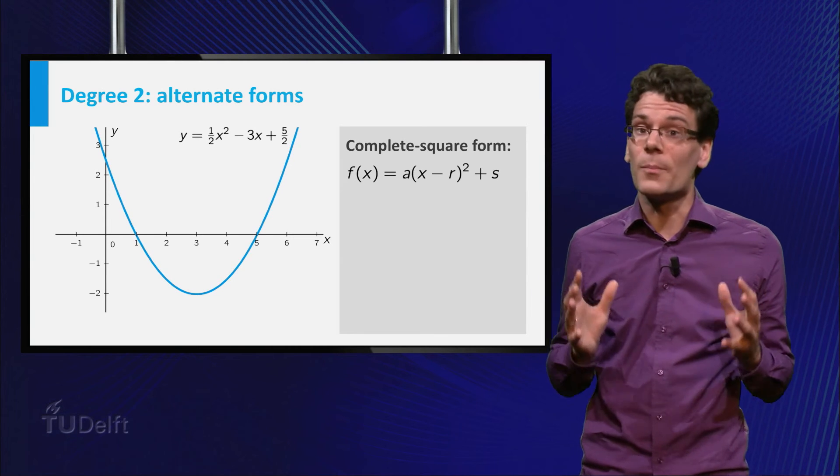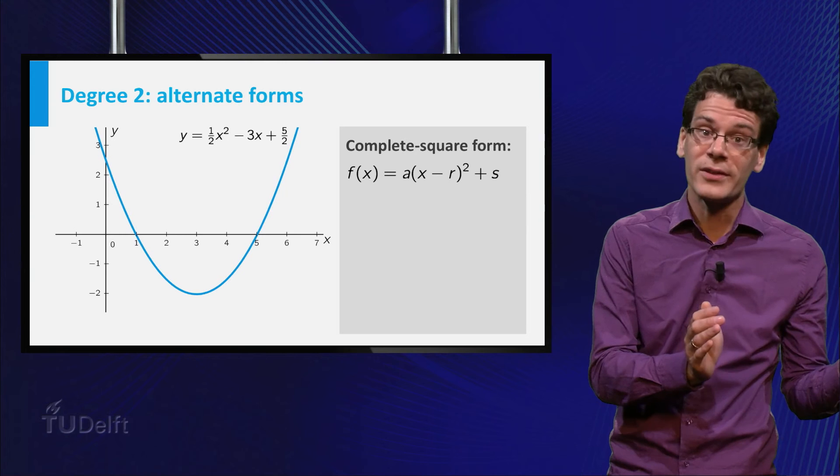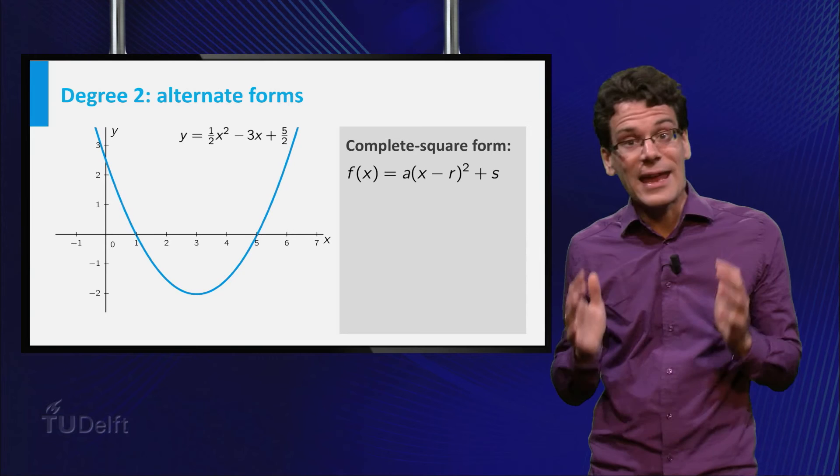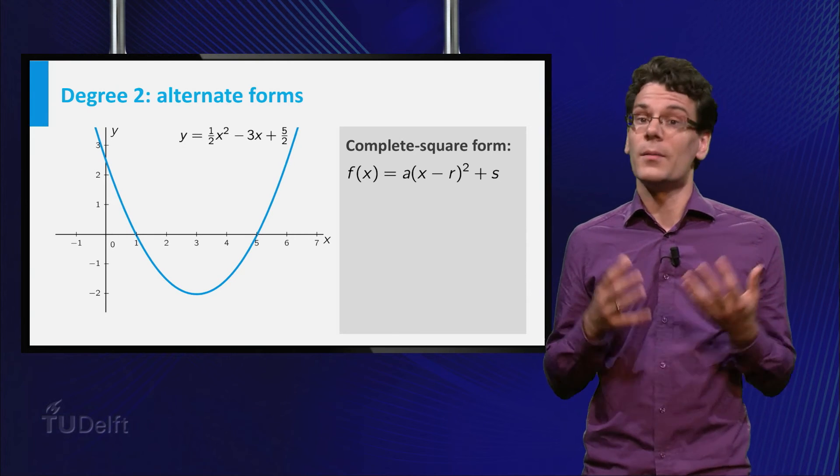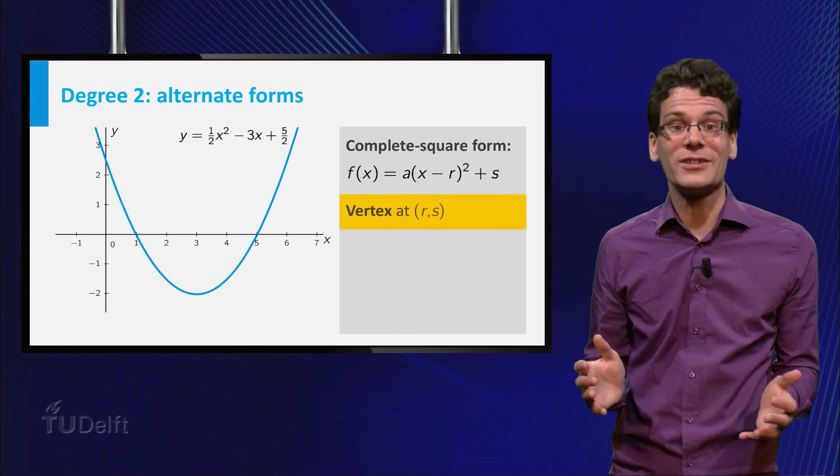Another common form is the complete square form, a times x minus r squared plus s, where a, r and s are numbers. Here, a plays the same role as before. But also r and s have a clear interpretation, they are the x and y-coordinates of the vertex.